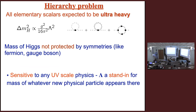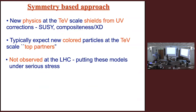As we heard, there is a hierarchy problem: elementary scalars are expected to be ultra-heavy. Their masses are not protected by symmetries, so they are sensitive to UV-scale physics. Lambda here is a stand-in for whatever scale of new physics you assume is appearing. The Higgs is expected to be very sensitive to that scale, and we don't understand why the Higgs mass was not pulled up to those very high scales wherever new physics comes in.